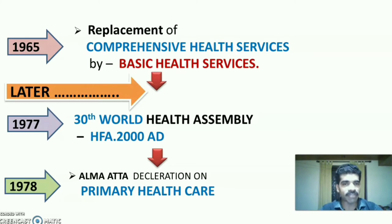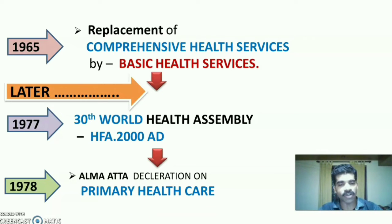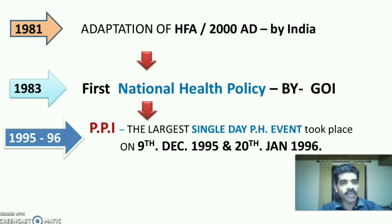In 1965, the Government of India replaced Comprehensive Health Care Services with Basic Health Services. In 1977, the 30th World Health Assembly mooted a plan of Health for All by 2000, followed by the 1978 Alma-Ata Declaration on Primary Health Care. The Government of India changed Basic Health Services into Primary Health Care during 1978, and in 1981 adopted Health for All by 2000.